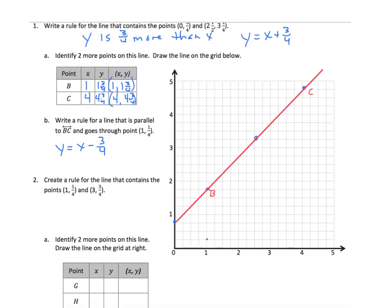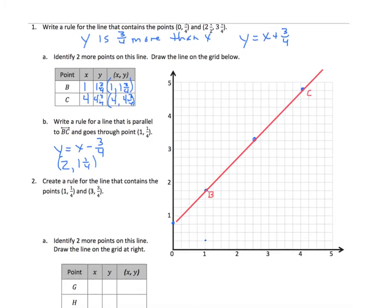We'll test it out by creating another ordered pair using that rule. So what if I start with 2? I have 2. 2 minus 3/4 would be 2, 1, and 1/4. So let's try that out. Now we'll plot that point. 2 and 1 and 1/4.